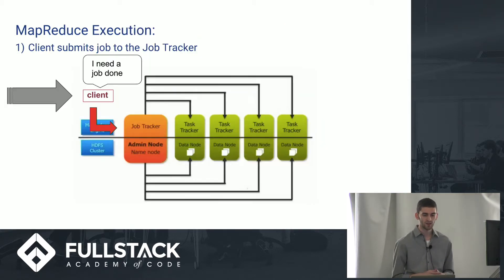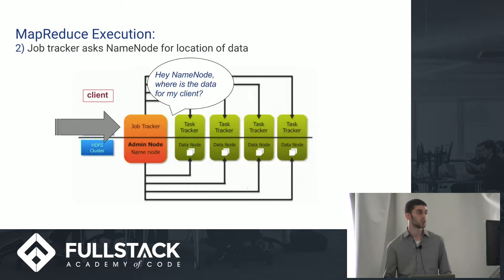So, here we have a client, as you can see on the left. The client submits a job to the server, to the job tracker. It says, I need to get a job done. Awesome. So, the job tracker will say, all right, name node. Where are all the files that I need to process this data?